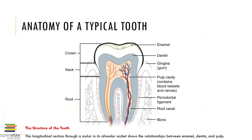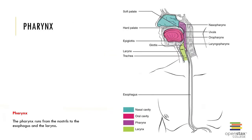Here's a look at the anatomy of a typical tooth. Diving back in to talk about the pharynx — more commonly called the throat. It also possesses skeletal muscle tissue, used for swallowing. We can divide the pharynx into three regions: the nasopharynx, the oropharynx, and the laryngopharynx.